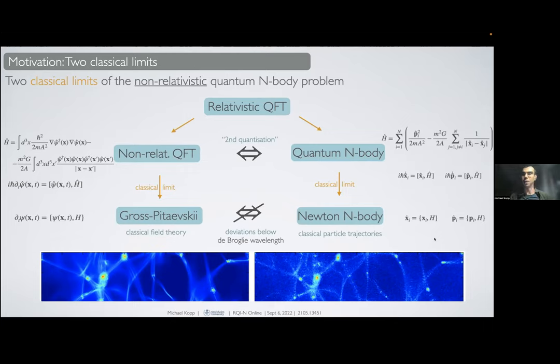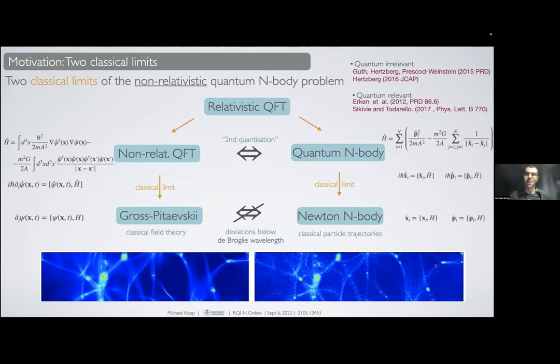The hand-wavy argument to decide which of those should apply is whether the de Broglie wavelength is much smaller or much larger than the interparticle distance. Yet there are some people discussing whether there's actually anything quantum mechanical or not going on.